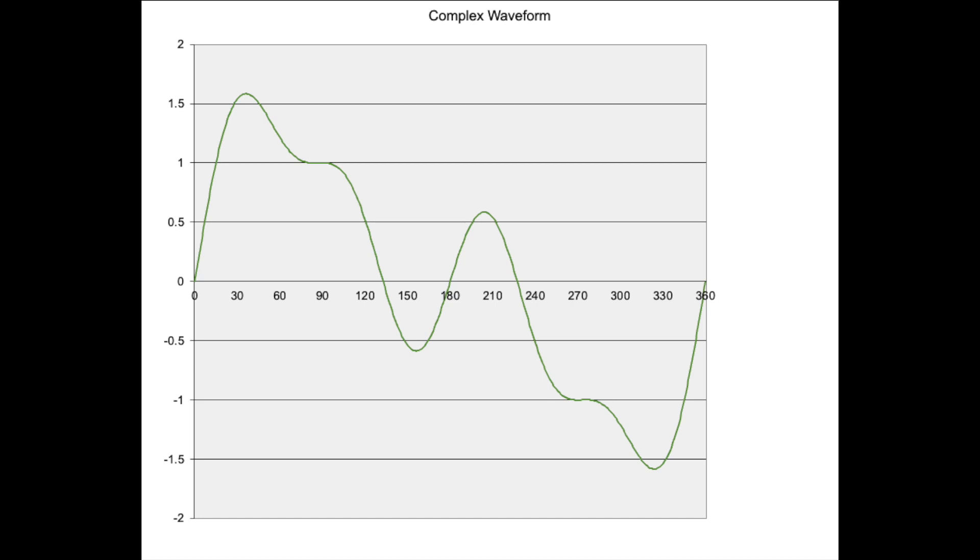Complex waveforms are made up of individual frequencies of different amplitudes, and it's these that give the resulting waveform its distinctive sound. A complex waveform is made up of a number of individual sine wave frequencies, and to figure out what these frequencies are, we can use a mathematical process known as a Fourier transform.